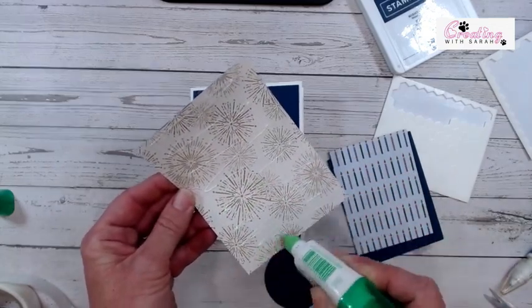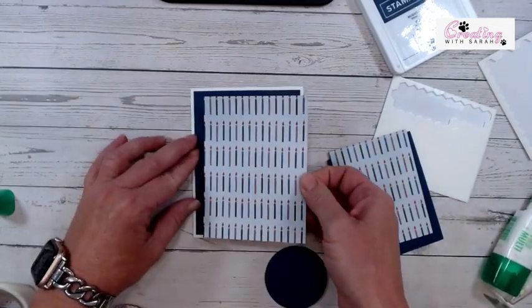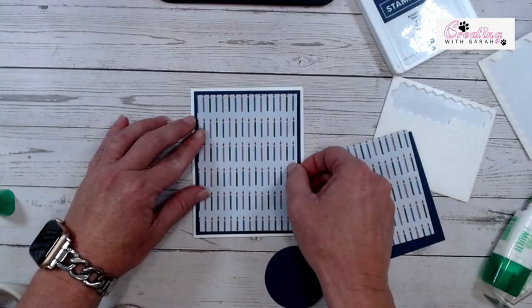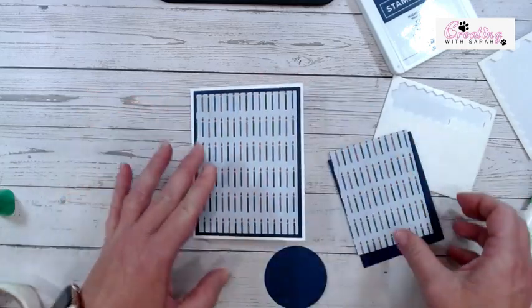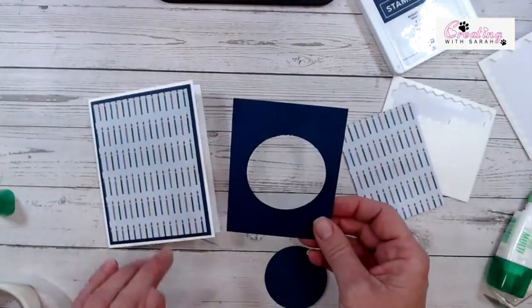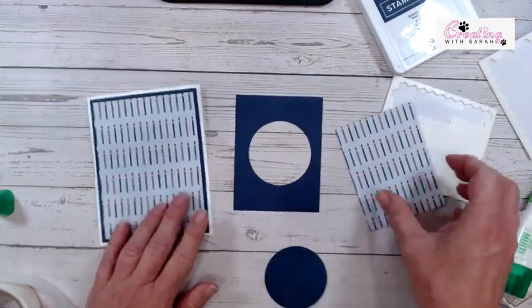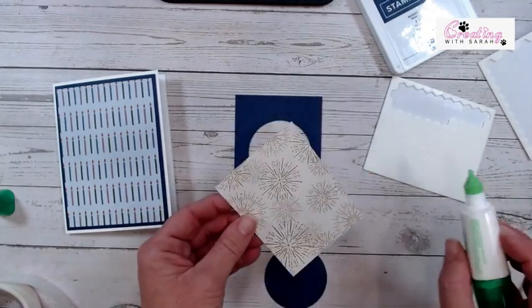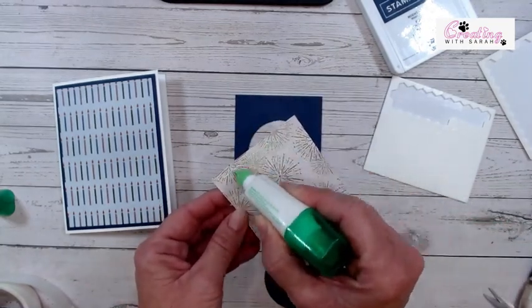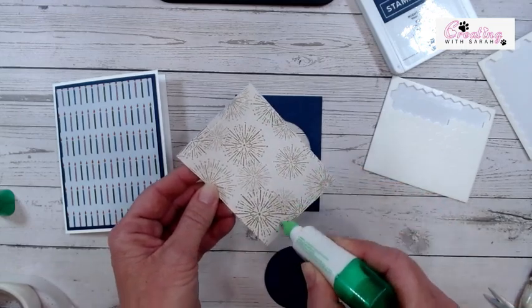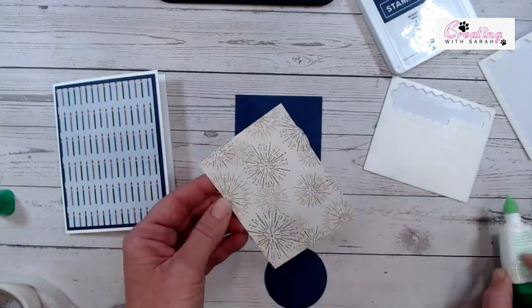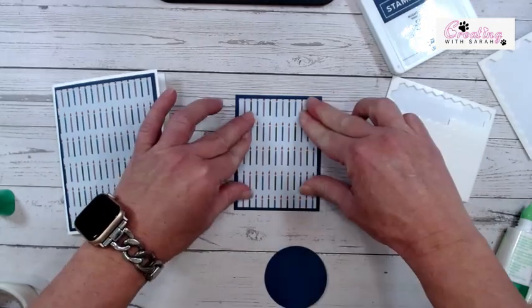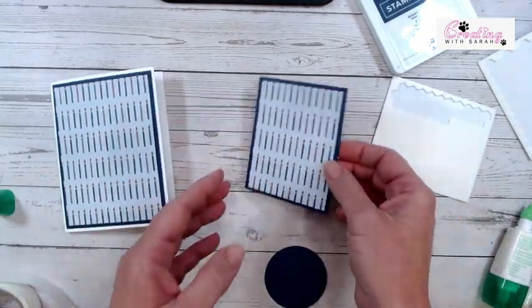Now the only bad thing about doing that is you have to glue all of it to the card base itself. Otherwise, you're going to get glue everywhere. Hello, Teresa. So I'm going to go ahead and put some adhesive on here, glue it down. So I'm kind of working a little backwards, but it's just because I chopped the centers out. This one I can put glue all over and it's going to cover up that hole.